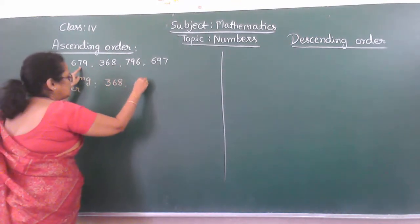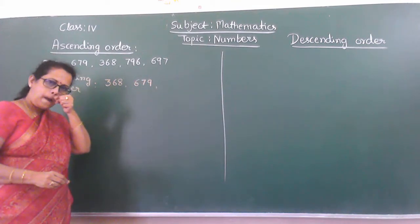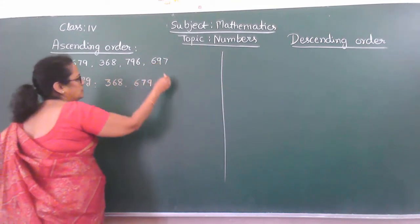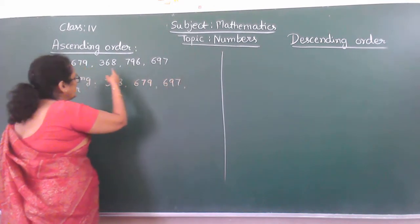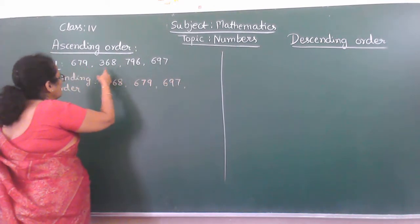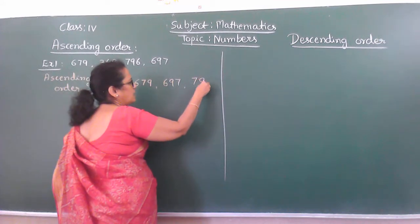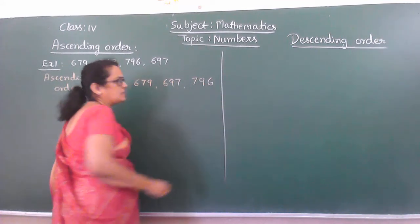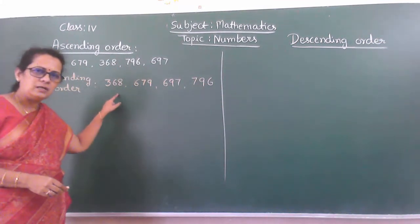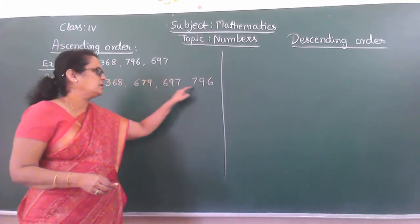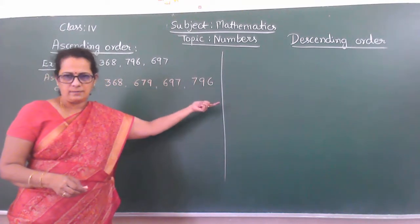So write 679 as the next number. Next one is 697, and the last one left over is 796. See here: small, a little bit bigger, bigger, and biggest — that is the greatest number.